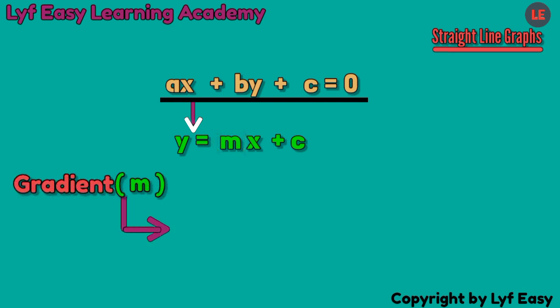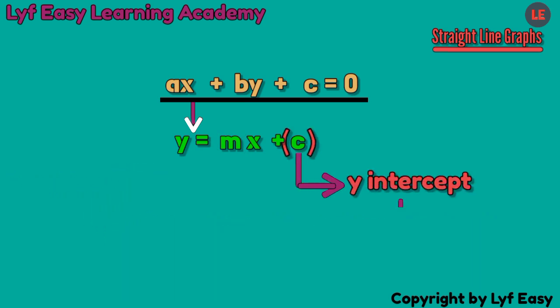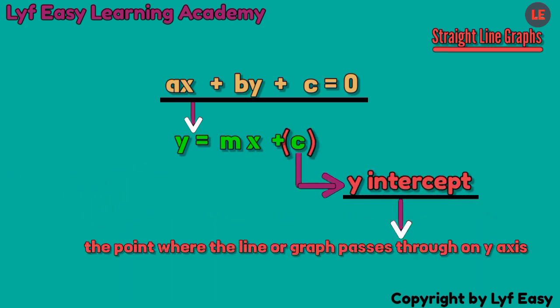Which simply means the rate of change of y with respect to x. And this C is y-intercept, which means where the graph will cut through on y-axis.